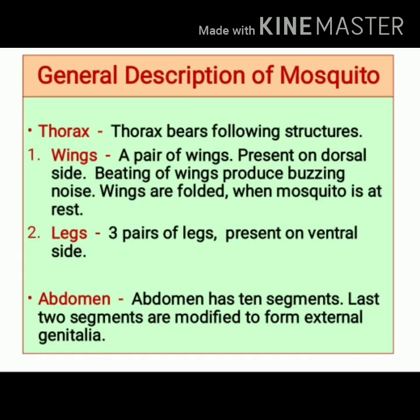The thorax of the mosquito is large. It is rounded and shows presence of a pair of wings. Wings are present on the dorsal side, and beating of the wings produces a buzzing noise. When the mosquito is at rest, wings are folded. On the ventral side of the thorax, three pairs of legs are present.